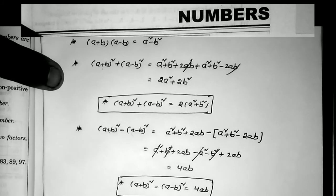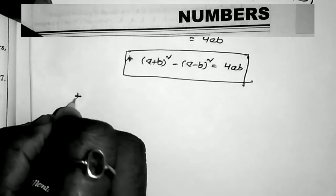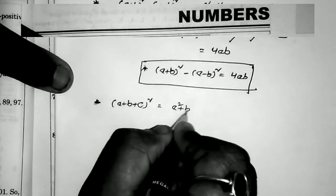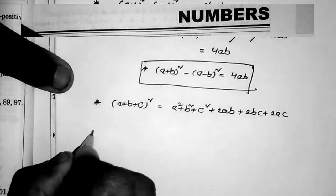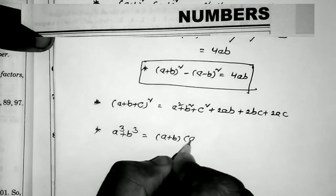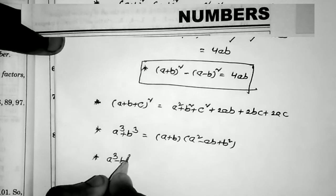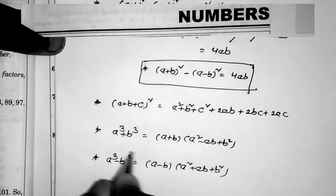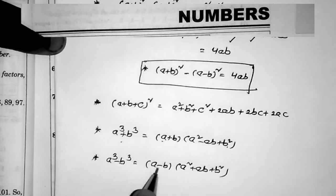We are converting formulas so we can directly apply them. Next formula: (a + b + c)² = a² + b² + c² + 2ab + 2bc + 2ac. Also: a³ + b³ = (a + b)(a² − ab + b²), and a³ − b³ = (a − b)(a² + ab + b²). These are the most important formulas for solving number problems.